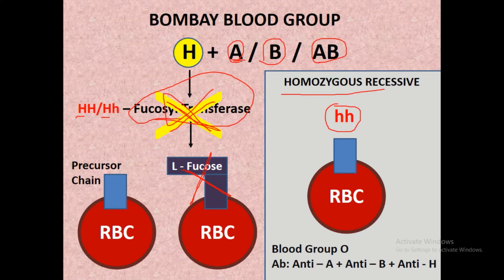Even if the person carries genes for antigen A, antigen B, or AB antigen, there is no synthesis of either antigen A or antigen B on the surface of RBC. In the absence of Fucosyltransferase enzyme, there is no antigen A or antigen B present on the surface of RBC even if gene A or gene B is present. Their blood group appears as O, and the antibodies present in their plasma are antibody A, antibody B, and antibody against H substance.